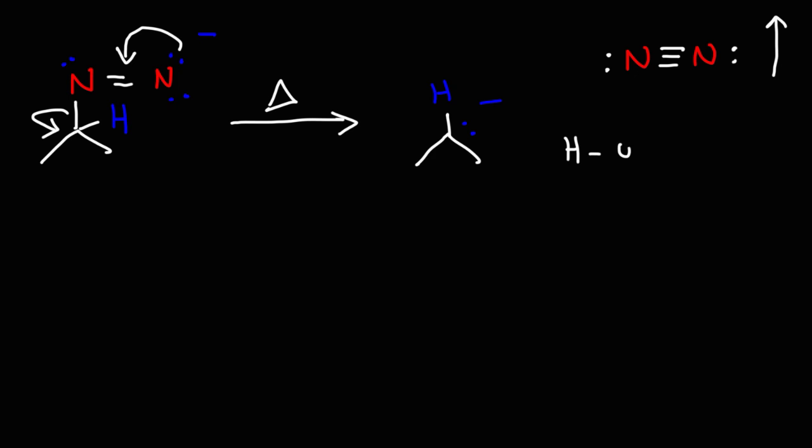The last thing that's going to happen is the carbanion is going to abstract a proton, regenerating the base catalyst, and the end result is we're left with an alkane. That's the mechanism for the Wolf-Kishner reduction reaction. It converts a ketone into an alkane using hydrazine in the first step, and then using a strong base with heat in the second step.